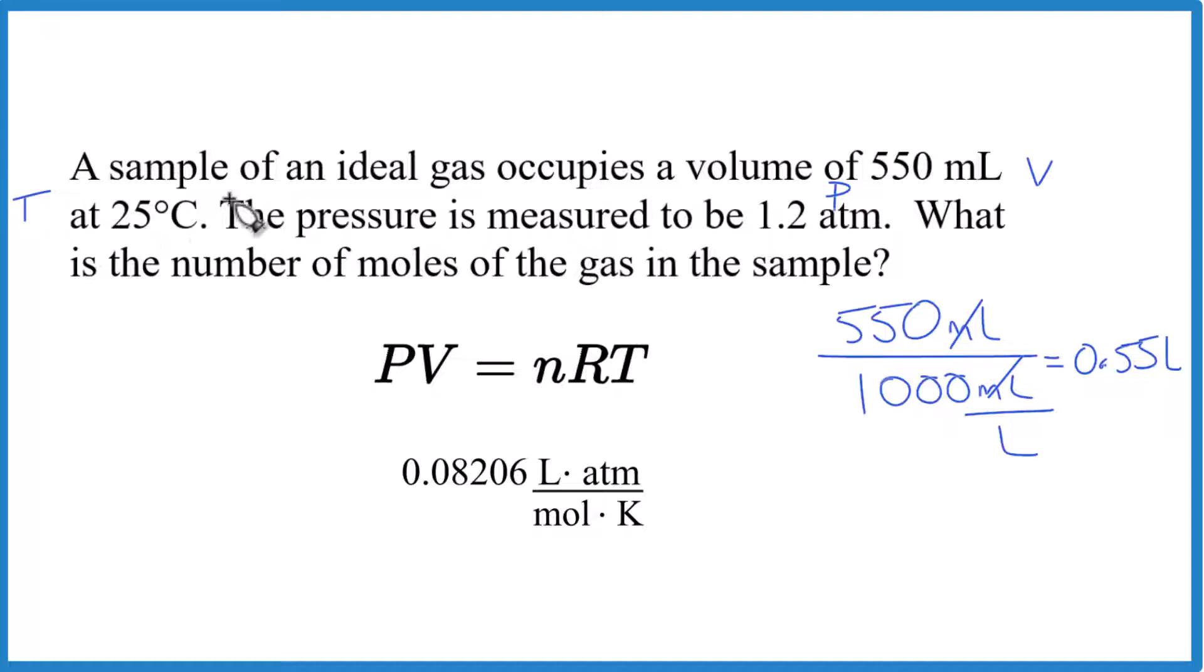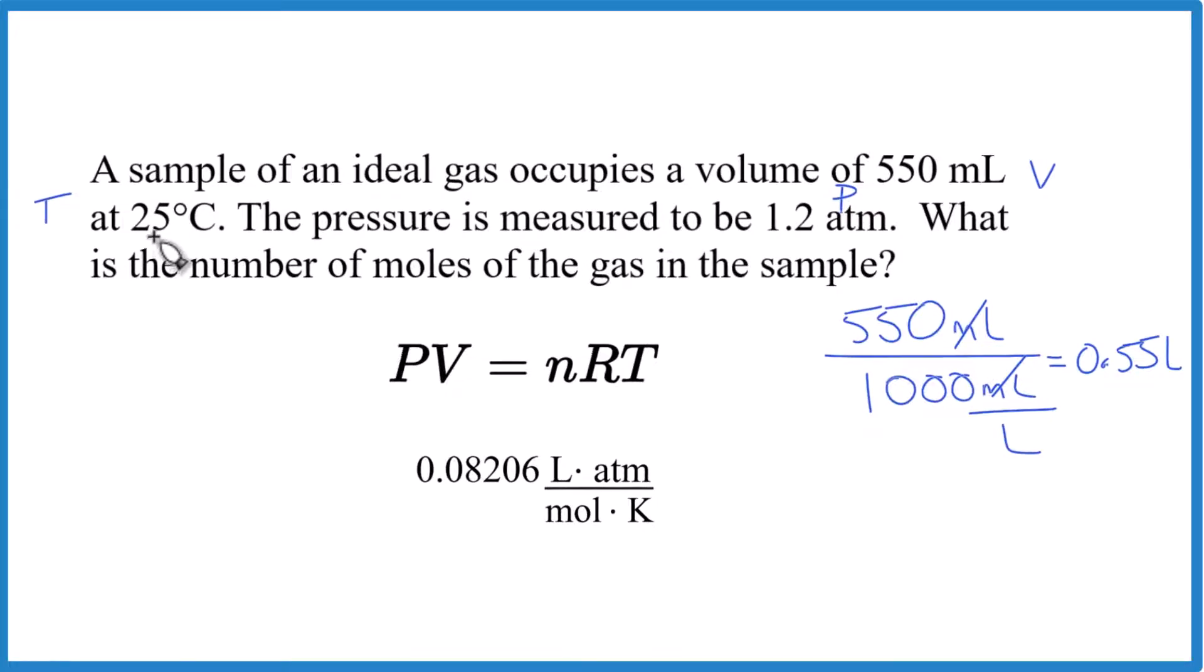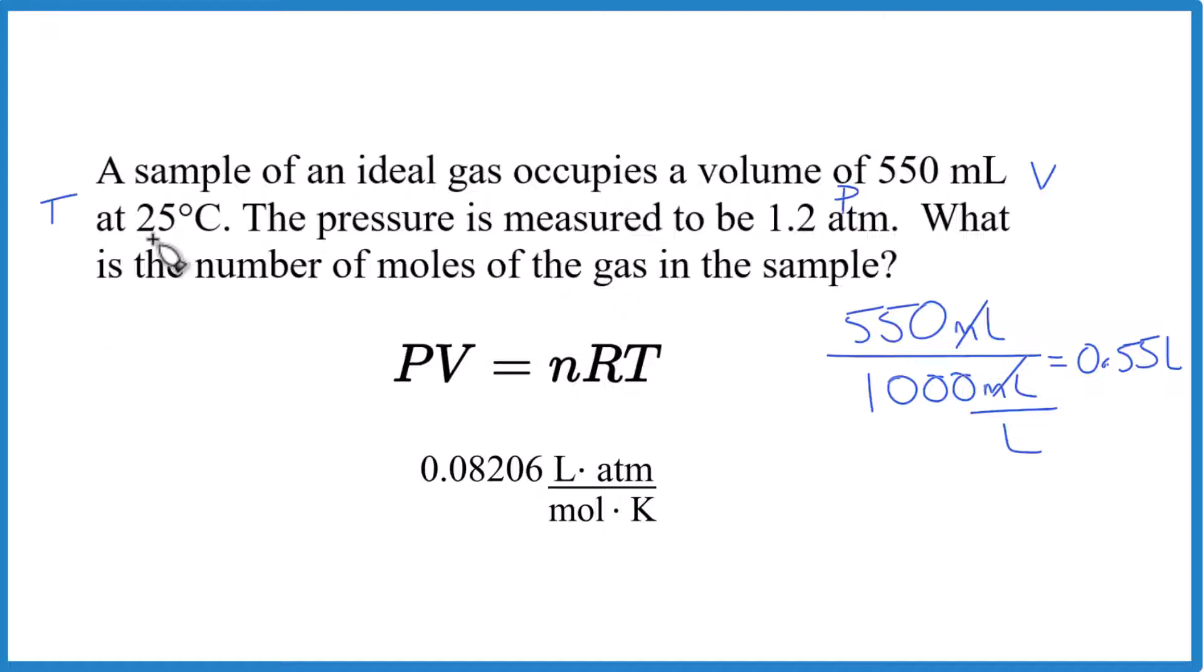To get from Celsius to Kelvin, we add our degrees Celsius to 273.15. That's going to give us 298.15 Kelvin. You can see we have Kelvin here, so we have to have degrees Kelvin over this side. And here we have liters in our unit, so we have to have liters here that we're working with. That's why we convert those.